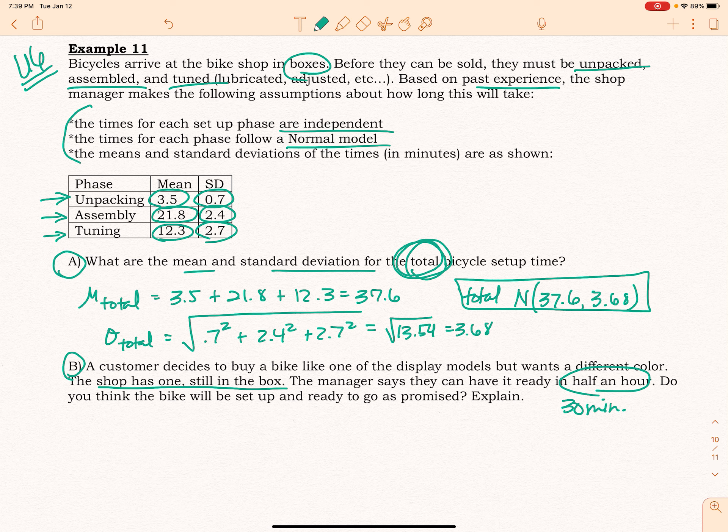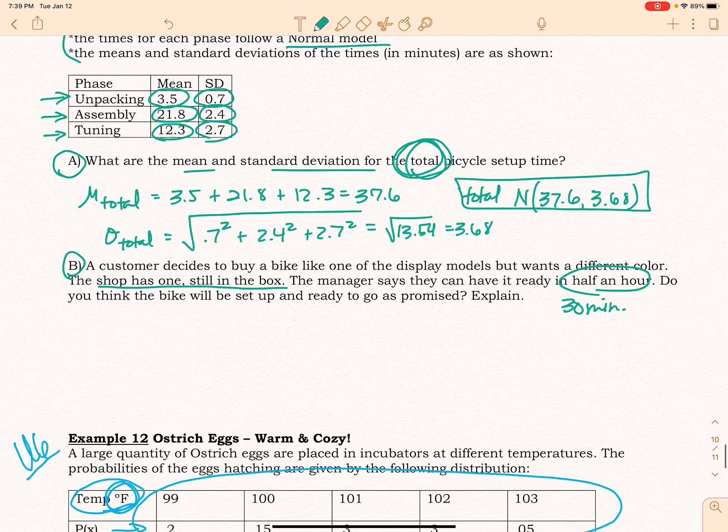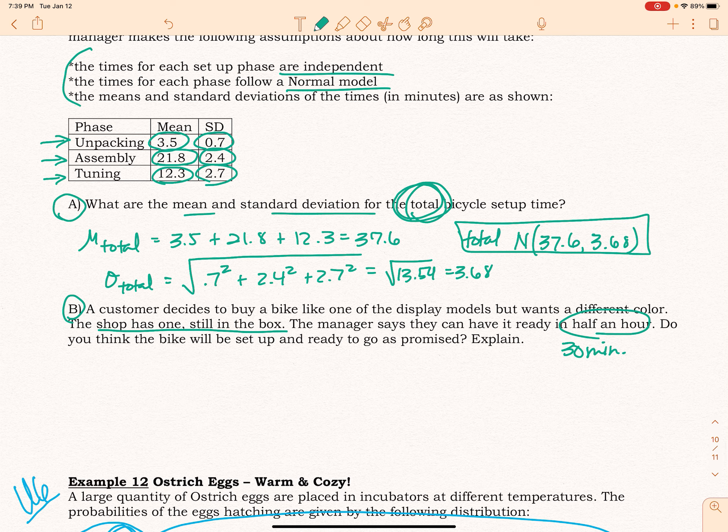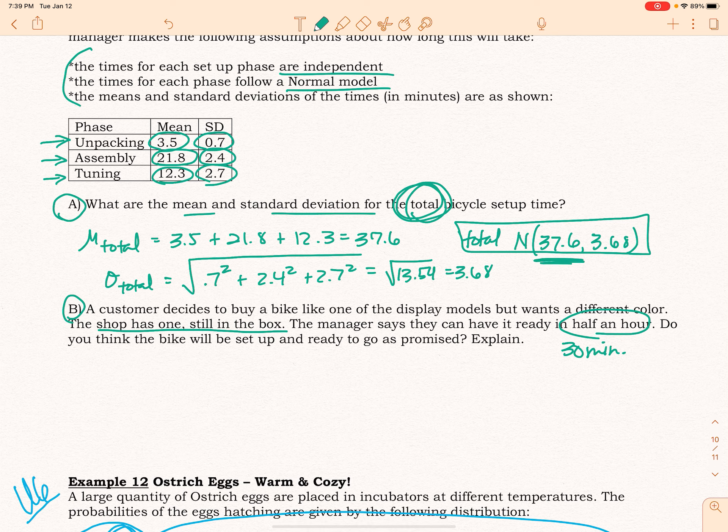We need to see how realistic it is that this would occur. There are a couple of different approaches you can take for this problem. You can base it on looking at the standard deviations—like how many standard deviations from the mean 30 minutes would be. You could think of it in terms of finding the probability that it would get done in as little as 30 minutes. What you need to consider is that on average, this whole process is taking about 37.6 minutes.